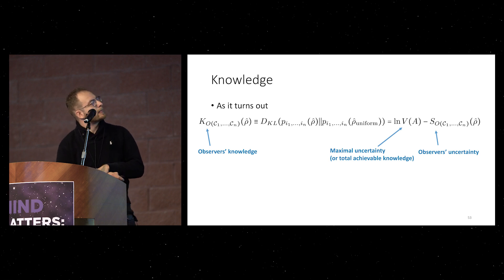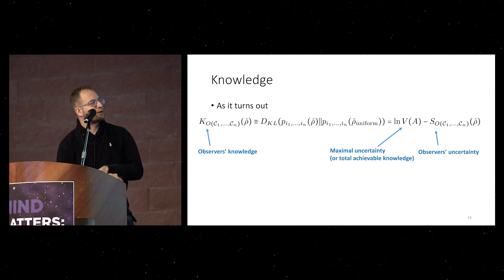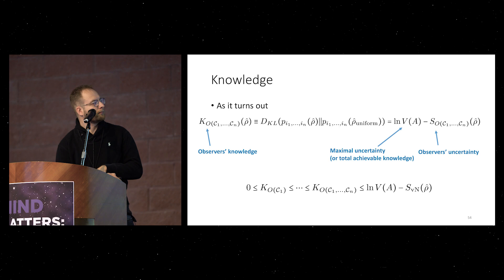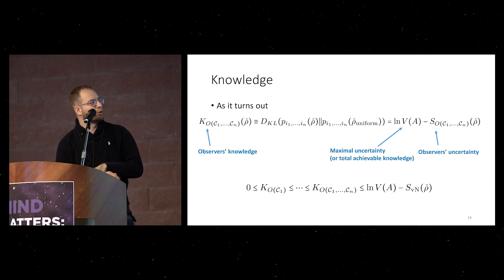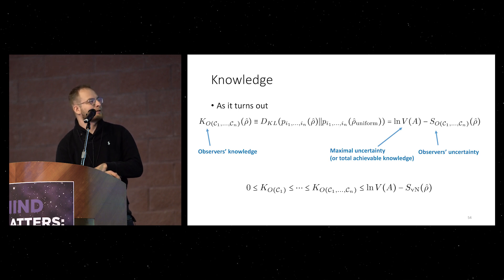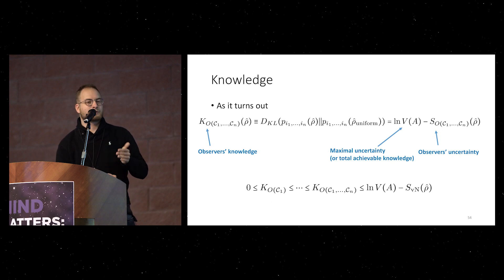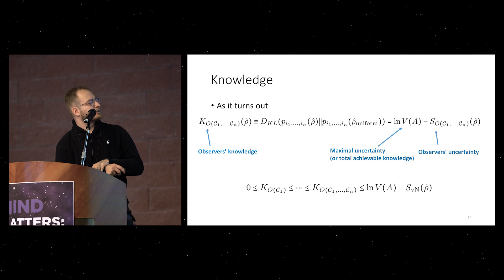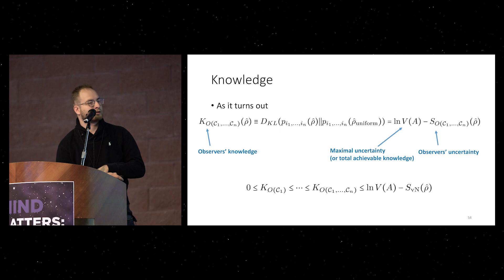You can also call this total achievable knowledge, although I would like to stress out that it is not really achievable, because what you can achieve by asking question is this total achievable knowledge minus von Neumann entropy. So, let's say this can be achievable only by some super being, but as an observer, you cannot achieve this. And this theorem just follows directly from what I showed before about observation entropy, because this is just a constant.